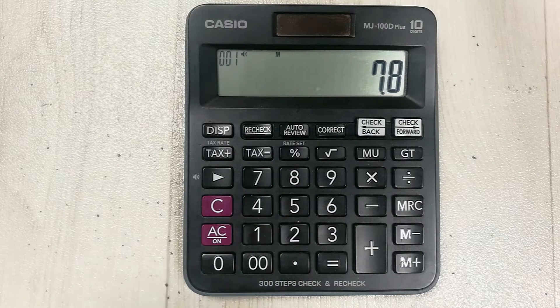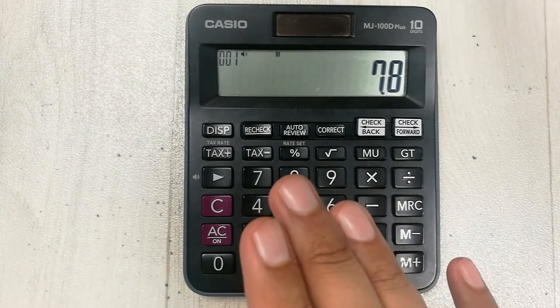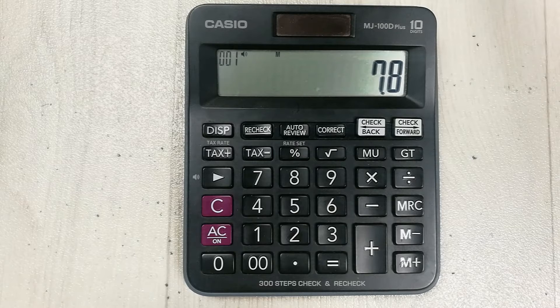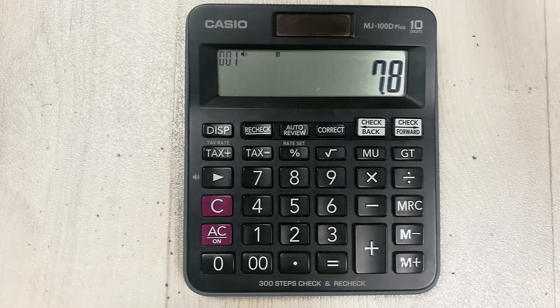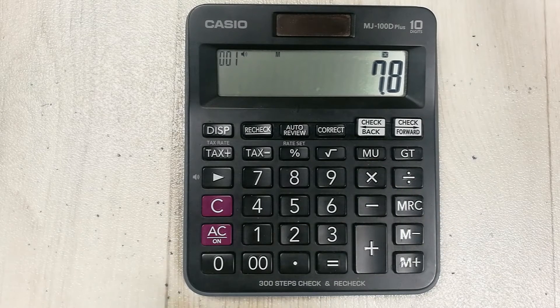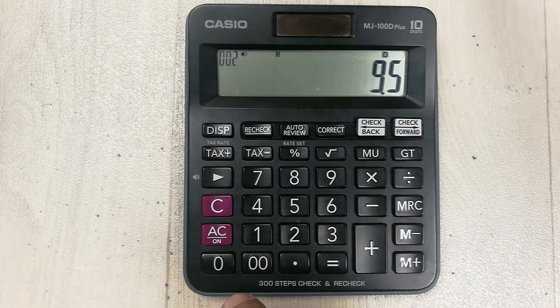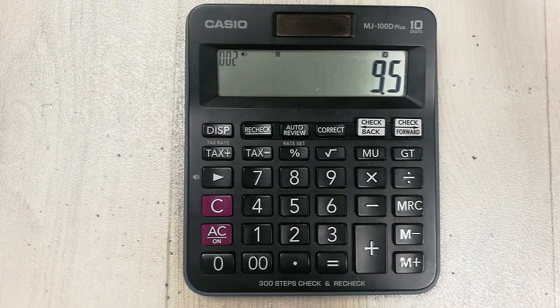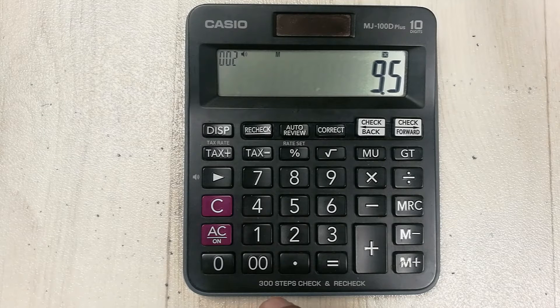And you want to convert this CGPA into percentage. So what you will do is you multiply this 7.8 with 9.5. So you always have to multiply your CGPA with 9.5 to convert it into percentage form.